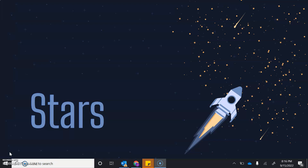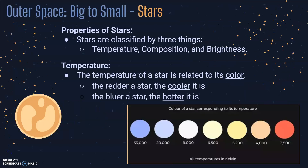If you have any questions, we'll make sure we touch on everything again on Monday and do a little review to get everybody on the same page. So today's topic is stars. Remember, we're going big to small — we started with the universe, then galaxies, and now we're going to talk about stars. Stars get classified by three things: their temperature, their composition, and their brightness.